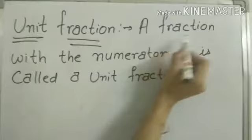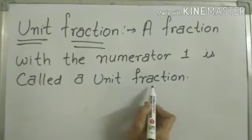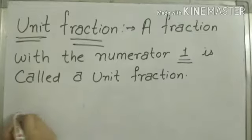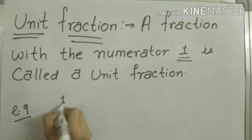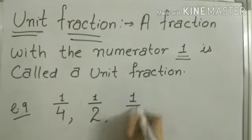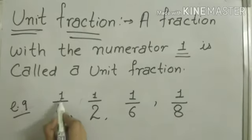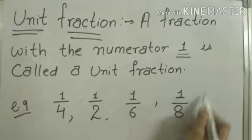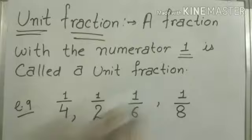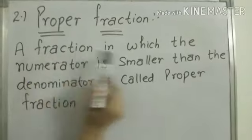A fraction with the numerator one is called a unit fraction. For example: 1 by 4, 1 by 2, 1 by 6, and 1 by 8. When the numerator of a fraction is one, it is called a unit fraction.